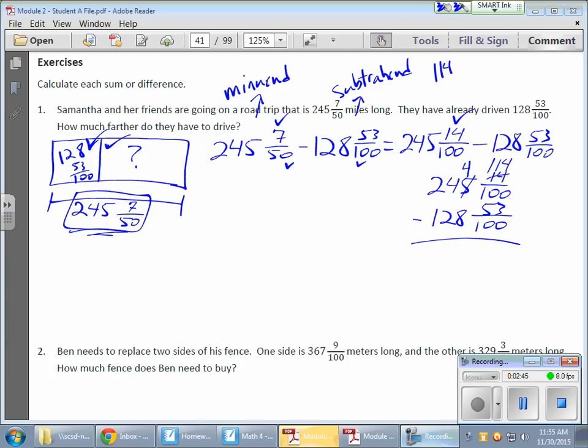So 114 minus 53, and that I can do off on the side. So 114 minus 53, there's a 1, 11 minus 5 gives me 6. So I wind up with 61 over 100, and now I can subtract these guys. I need to borrow again. So that's a 6 there, that's a 1, and that's a 1. So 116 and 61/100.